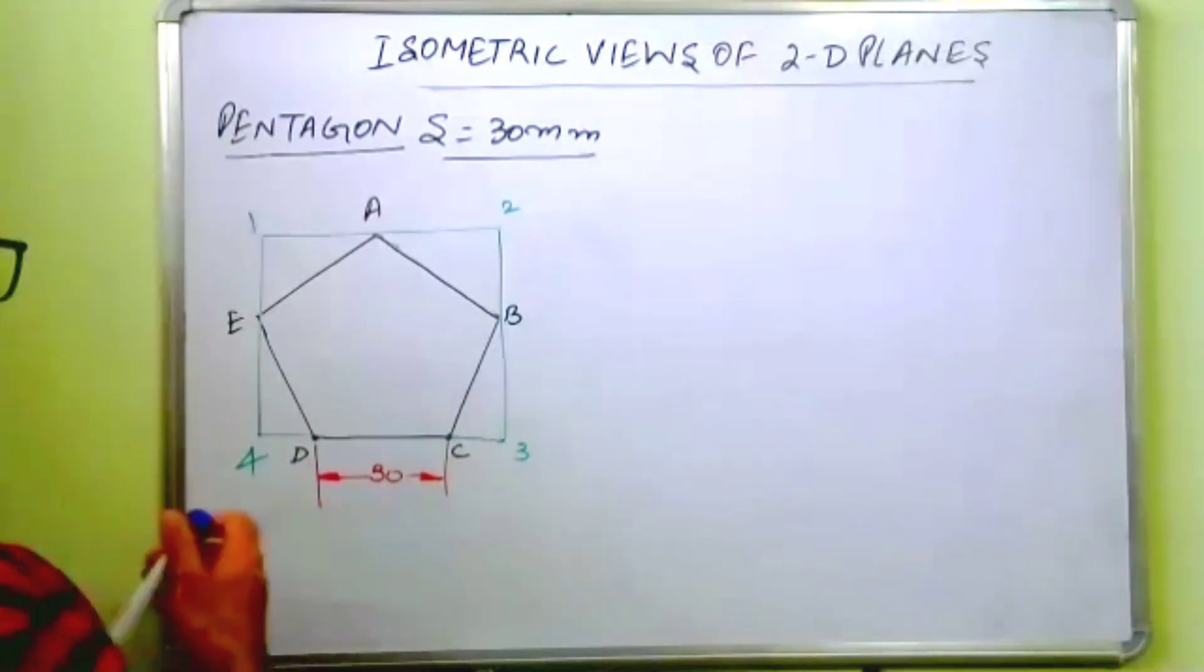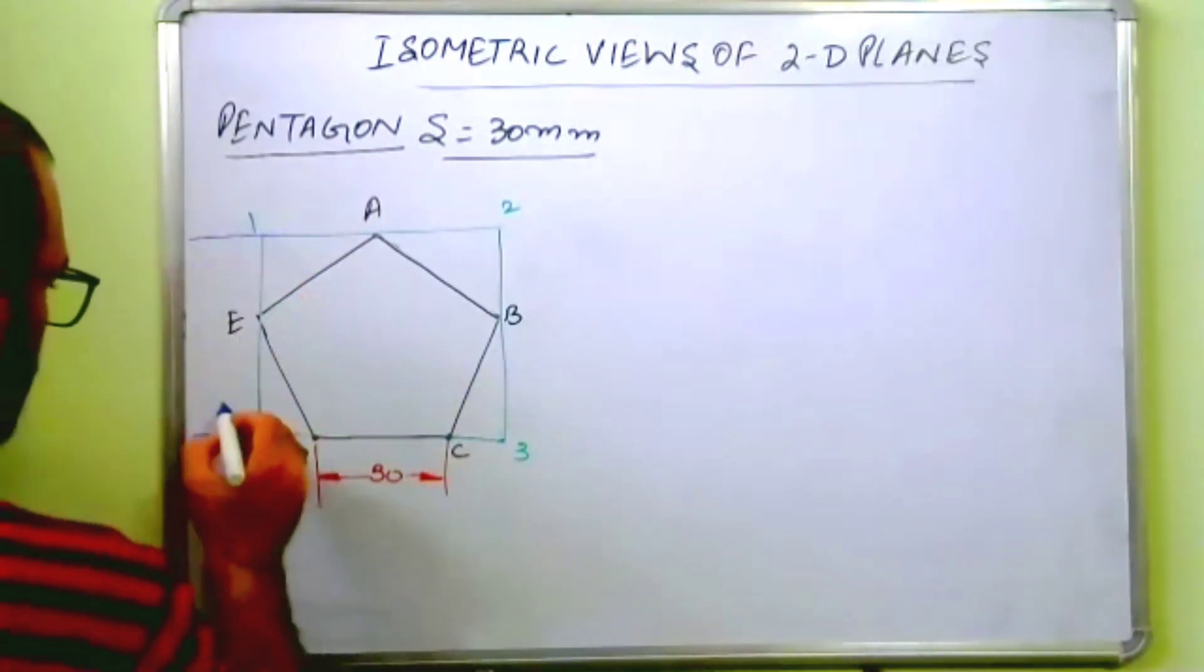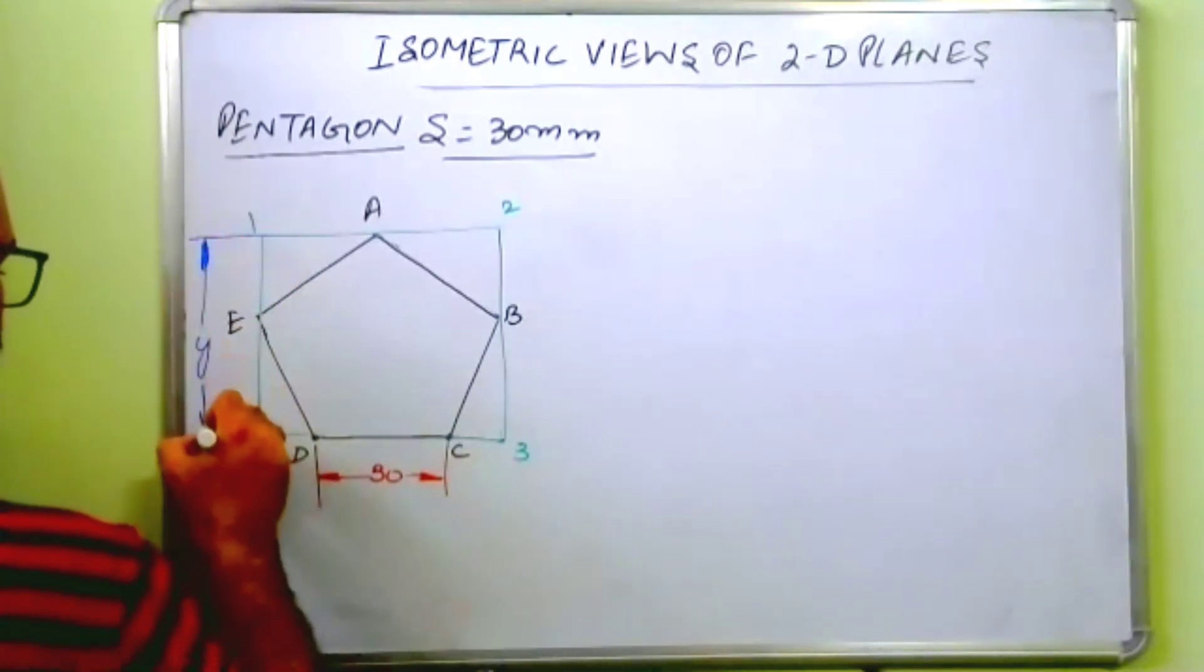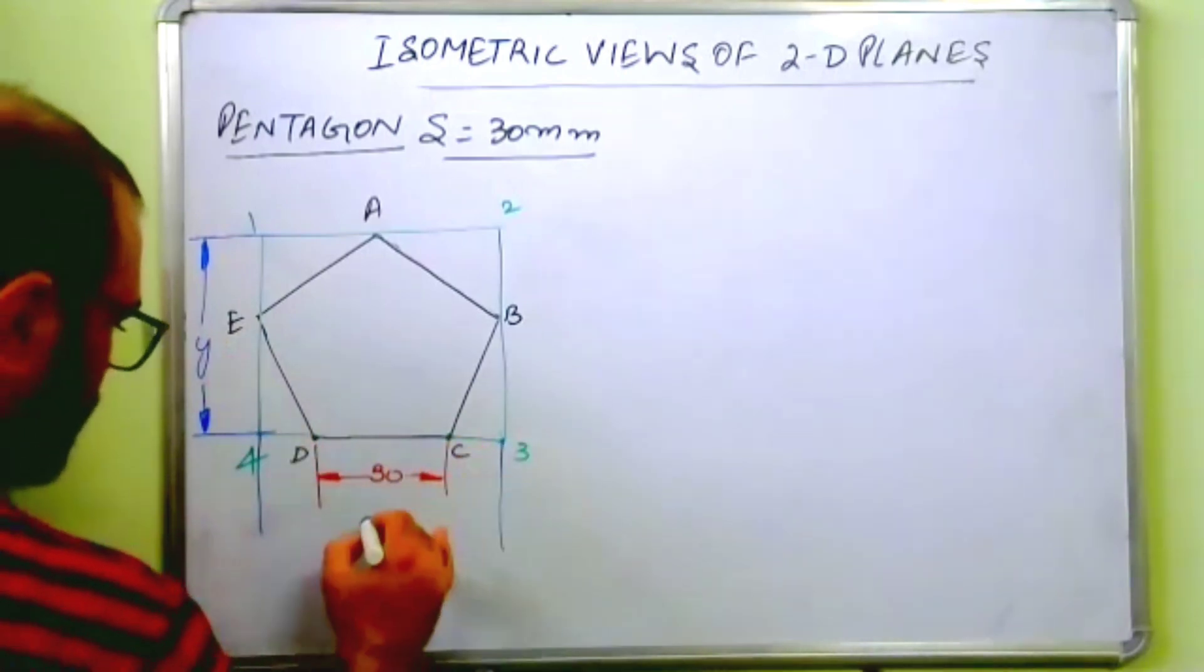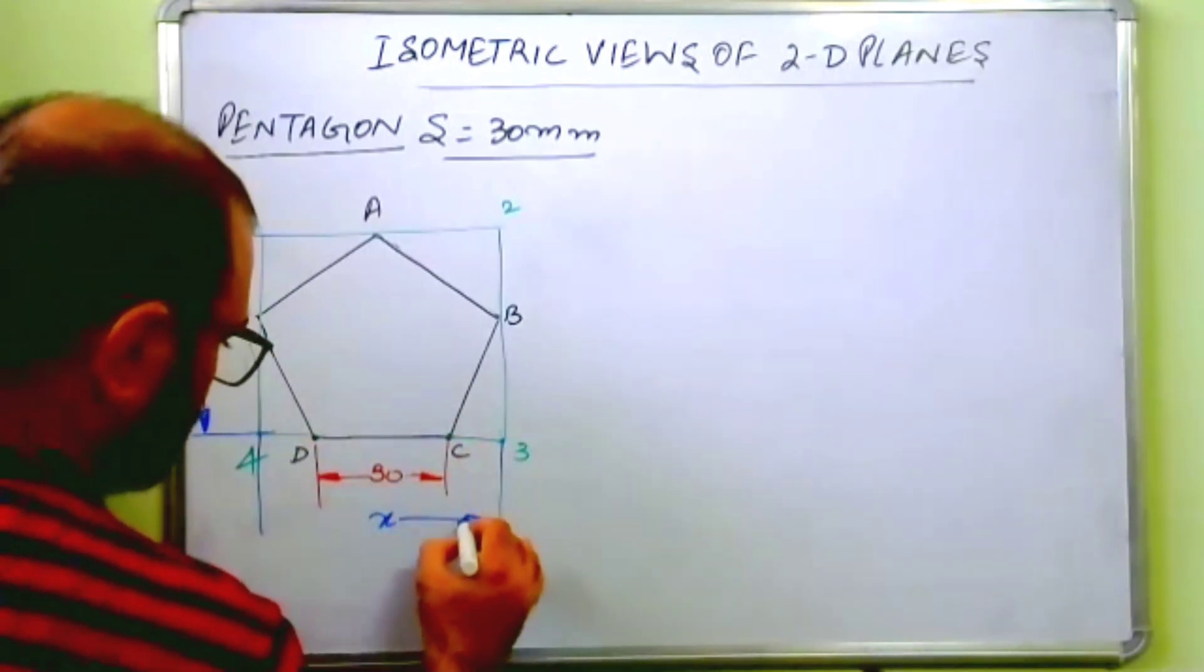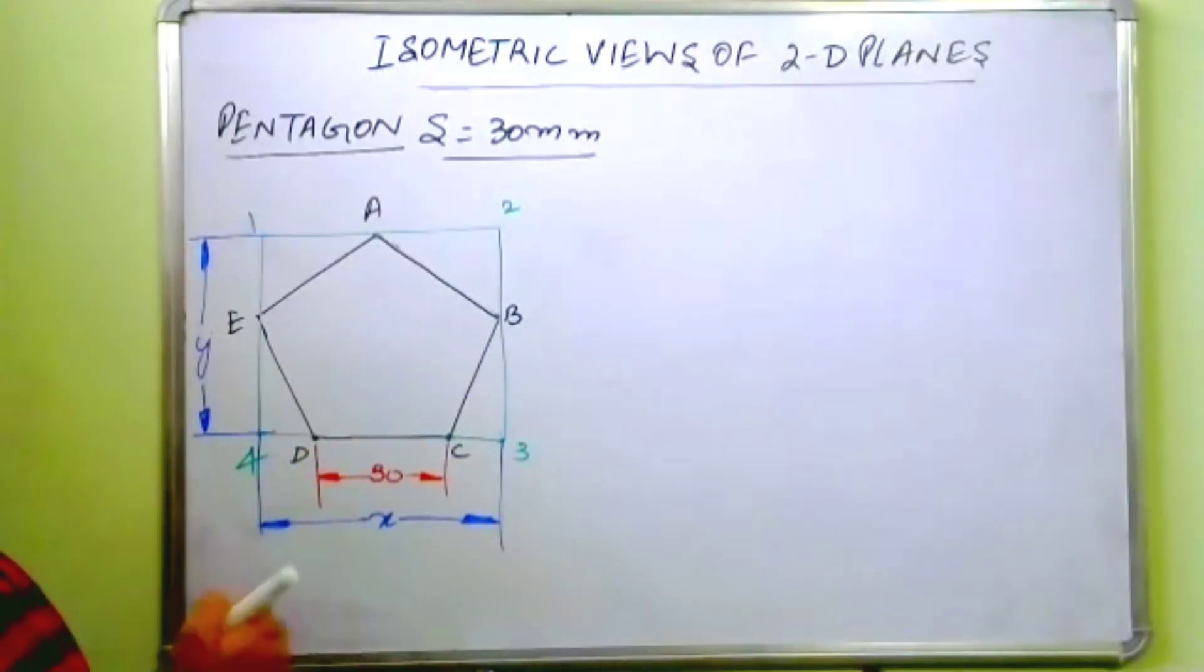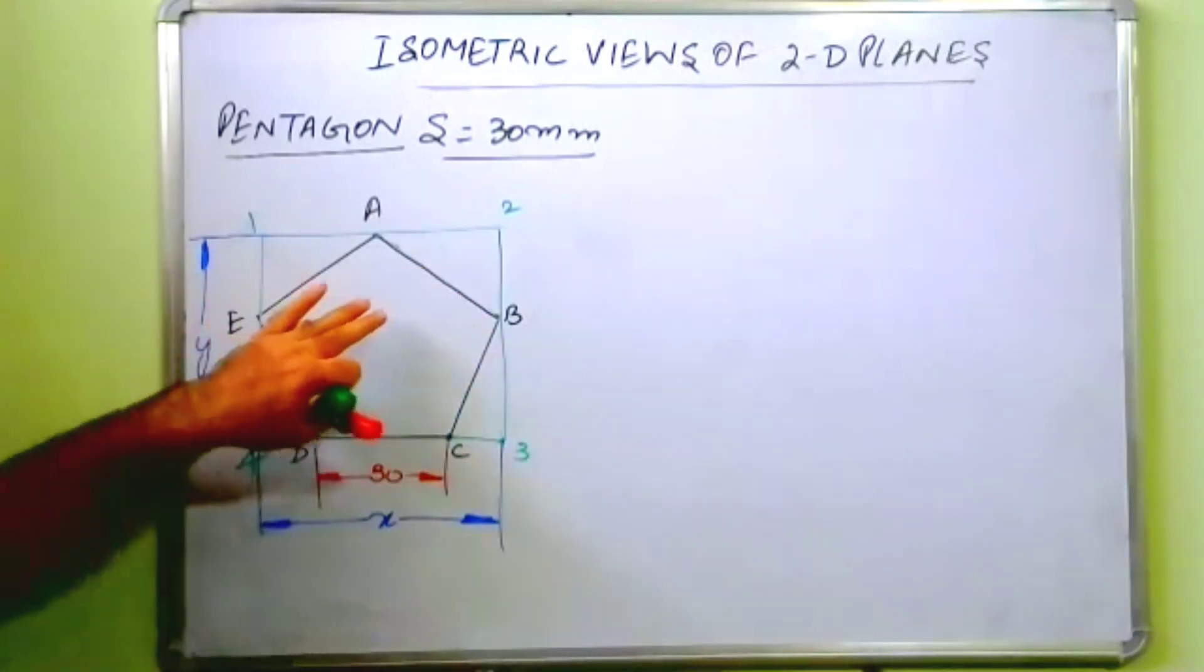Let us say this is equal to y, which you will get only after drawing this, and this is equal to x. I am writing y and x. These are the horizontal and vertical sides of this rectangle.